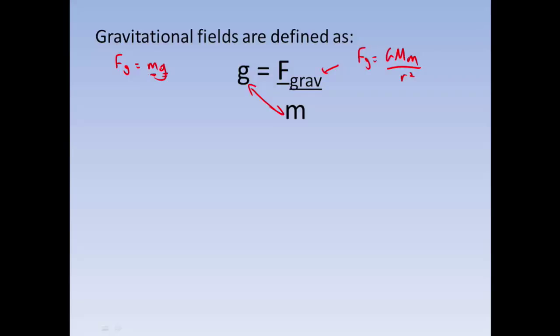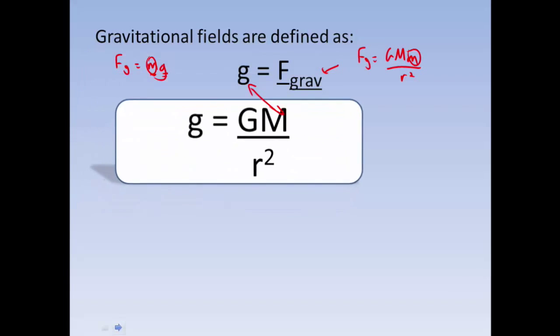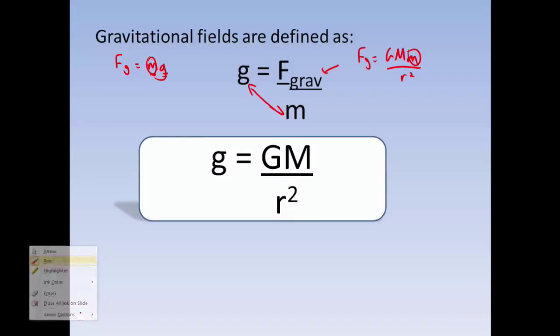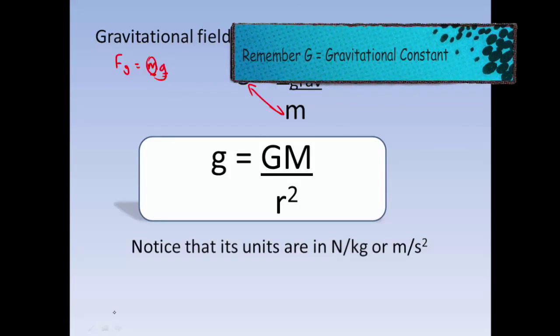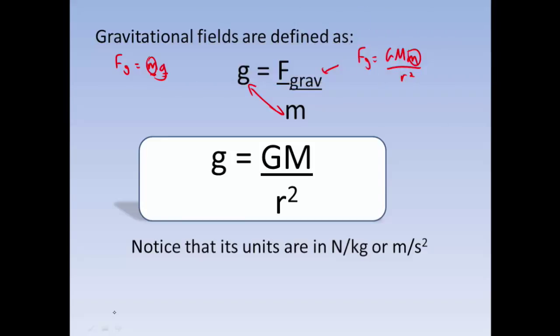So if we divide out the m, well, look what happens. The small m here, small m there, they're going to cancel out. And you're going to end up with this equation right here. And if you take a look at the units of this, you're going to end up with units of newtons per kilogram or meters per second squared. Again, one of the practices I really want you to get into is this idea of unitary analysis.